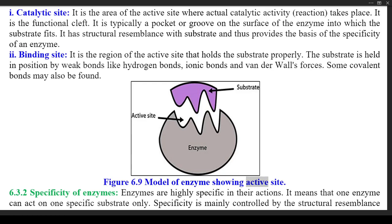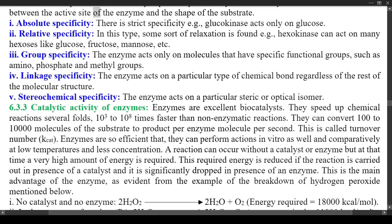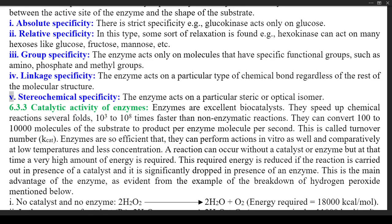Figure 6.9 shows the model of an enzyme showing the active site. 6.3.2 Specificity of Enzymes — enzymes are highly specific in their actions, meaning that one enzyme can act on one specific substrate only. Specificity is mainly controlled by the structural resemblance between the active site of the enzyme and the shape of the substrate. Types include: (1) Absolute specificity — strict specificity; e.g., glucokinase acts only on glucose. (2) Relative specificity — some relaxation is found; e.g., hexokinase can act on many hexoses like glucose, fructose, mannose, etc. (3) Group specificity — the enzyme acts only on molecules with specific functional groups such as amino, phosphate, and methyl groups. (4) Linkage specificity — acts on a particular type of chemical bond regardless of the rest of the molecular structure. (5) Stereochemical specificity — acts on a particular steric or optical isomer.